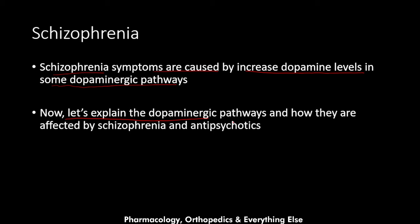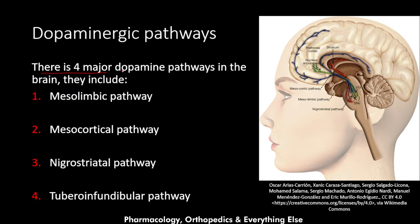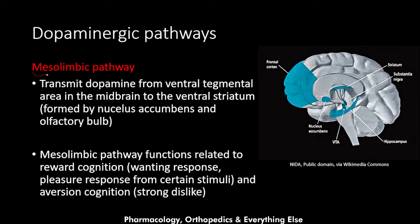There are four major dopaminergic pathways in the brain: the mesolimbic pathway, the mesocortical pathway, the nigrostriatal pathway, and the tuberoinfundibular pathway. The mesolimbic pathway transmits dopamine from the ventral tegmental area in the midbrain to the ventral striatum, which is formed by the nucleus accumbens and the olfactory bulb. The functions of this pathway are related to reward cognition.